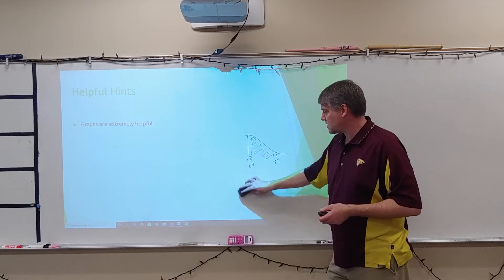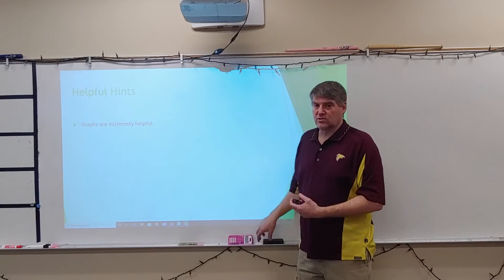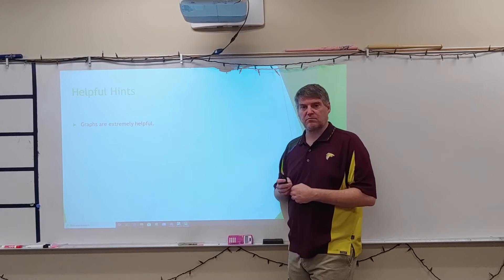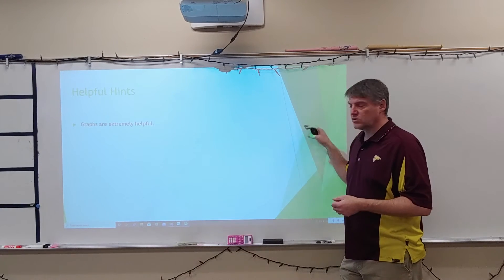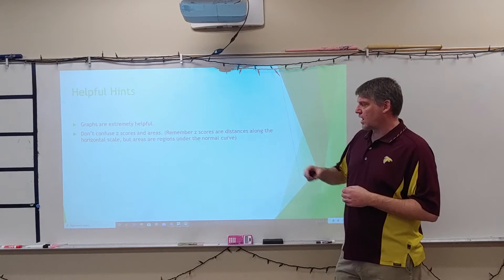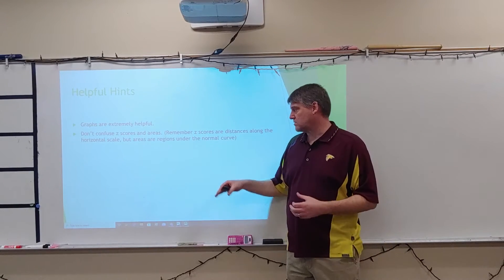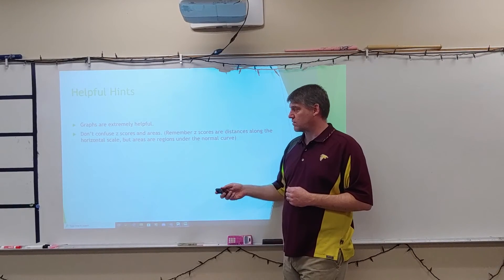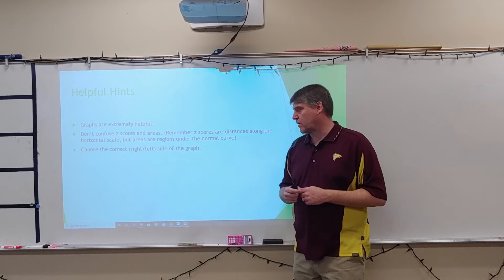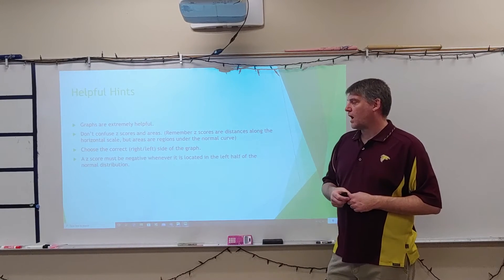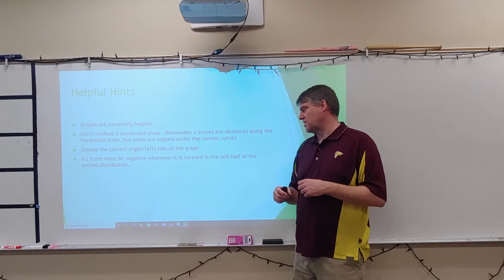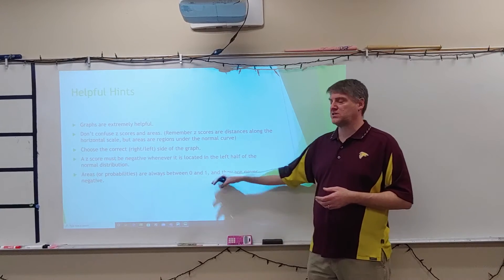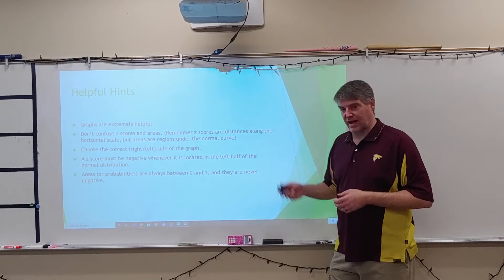Helpful hints: graphs are very useful to see what's going on, even if they don't appear in the slides. Don't confuse z-scores and areas — z-scores are distances along the horizontal scale, while areas are regions under the normal curve. Choose the correct right or left side of the graph. A z-score must be negative when it is located in the left half of the normal distribution, and areas or probabilities are always between 0 and 1 — they are never negative.